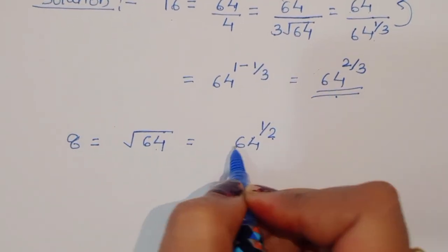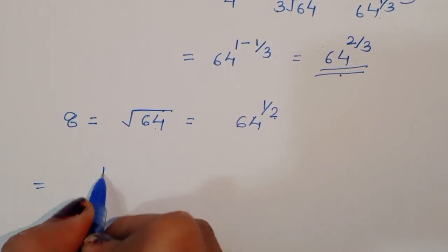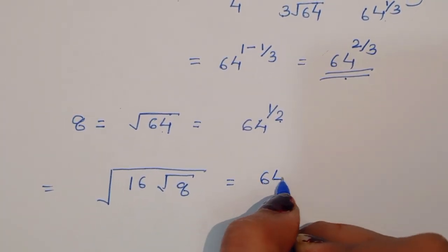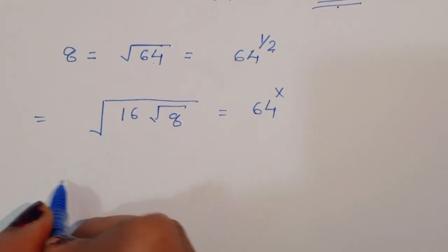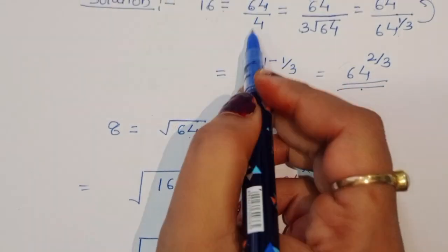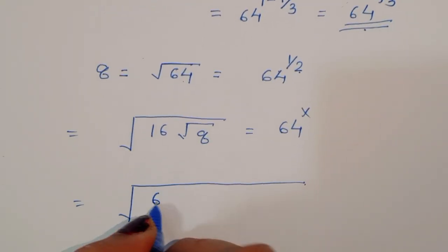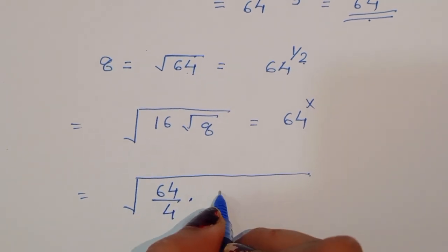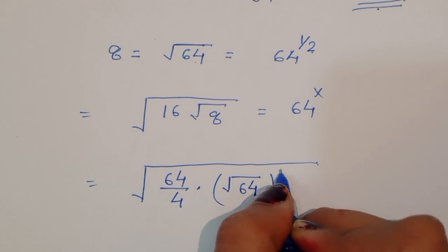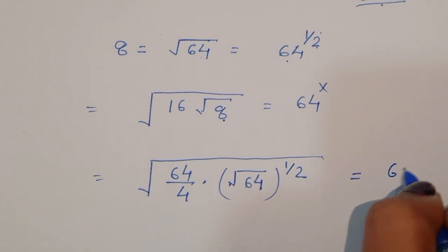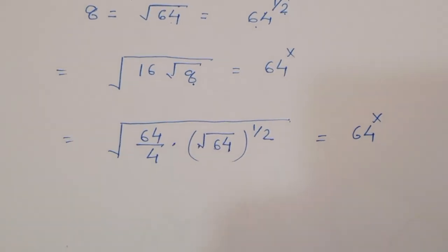Now we use the original equation: √16 · √8 = 64^x. We substitute: 16 = 64^(2/3) (which we found is 64/4 in simplified form), and √8 = √(64^(1/2)), so 8 = 64^(1/2). This is equal to 64^x.